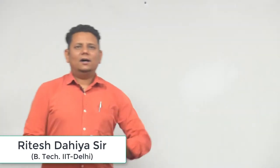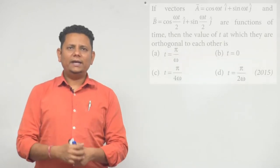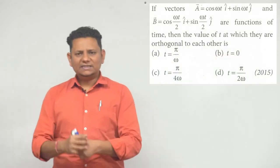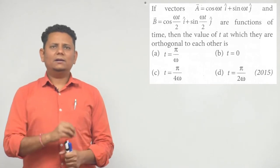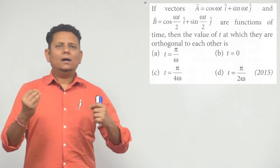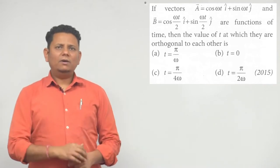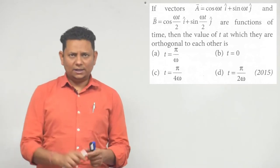Alright, next question. 2015. It says if vectors a is equal to cos omega t i cap plus sin omega t j cap and b vector is equal to cos omega t by 2 i cap plus sin omega t by 2 j cap are functions of time, then the value of t at which they are orthogonal to each other.